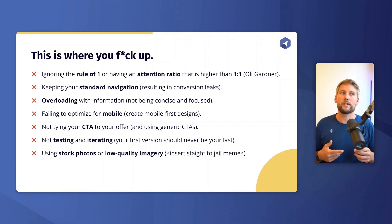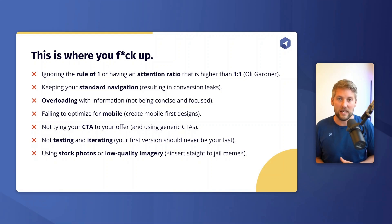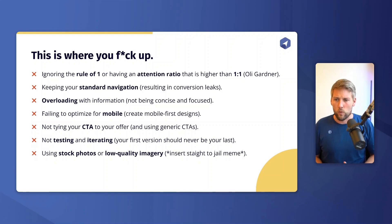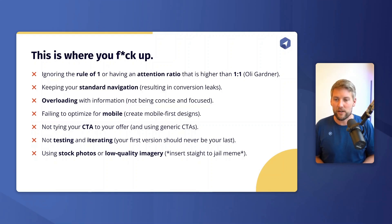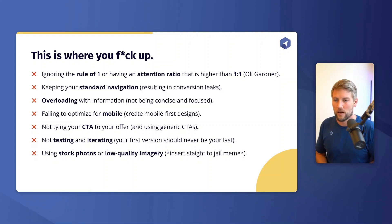Don't overload people with information — be concise and focused. Don't fail to optimize for mobile: design mobile-first if you're B2C, since more than 70% of website visitors come from mobile nowadays. For B2B SaaS you may still be more desktop-focused — check your traffic data. Tie your call to action to your offer, avoid generic CTAs like 'sign up now' or 'get quotation,' start with an attention-grabbing word, and keep it concise so it doesn't look hideous on mobile.